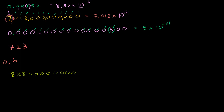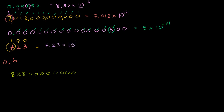For the number 723, it might be a little overkill to write in scientific notation, but it's good practice. The largest 10 that goes into this — 100 or 10 squared will go into 723. So this is going to be equal to 7.23 times 100, but we want to stay in scientific notation, so we write times 10 squared.